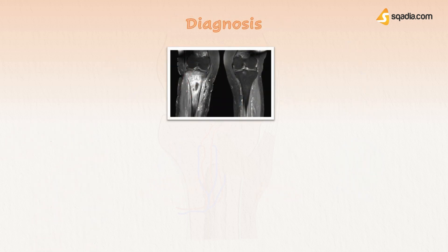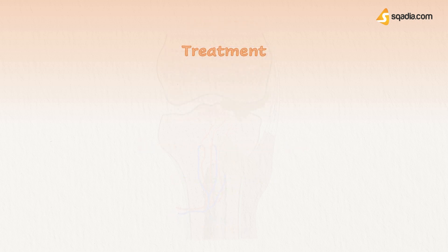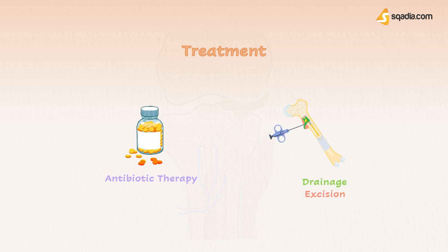How is osteomyelitis diagnosed? Diagnosis is mostly done on a clinical basis; however, radiological changes may develop later in the course of infection. An elevated ESR and CRP level can sometimes be sensitive, but they are not specific. Biopsy and aspiration of the infected site with culture is necessary to identify the organism. The way to treat osteomyelitis is by appropriate antibiotic therapy, along with drainage and excision of the sequestrum.